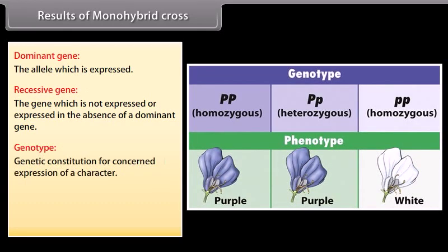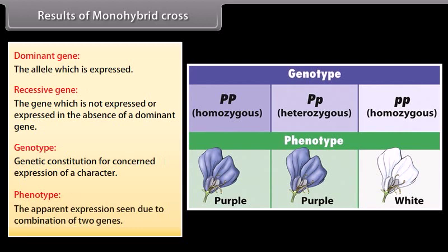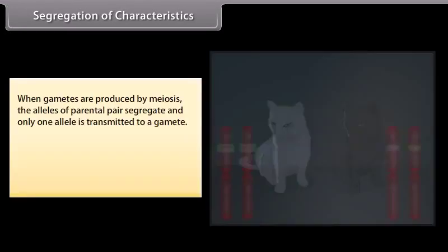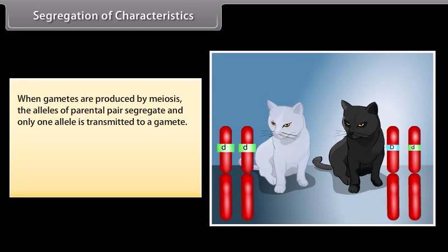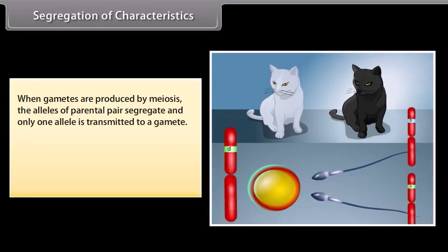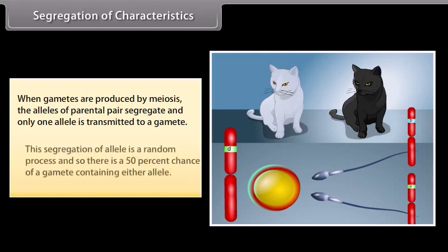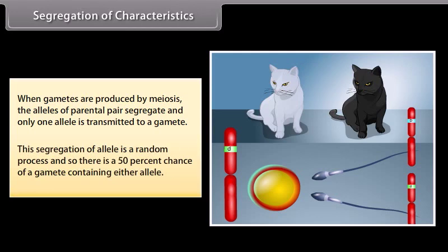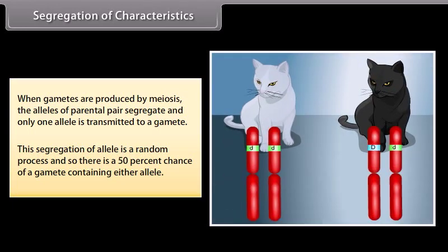Genotype: the genetic constitution for the concerned expression of a character. Phenotype: the apparent expression seen due to the combination of two genes. Segregation of characteristics: when gametes are produced by meiosis, the alleles of a parental pair segregate and only one allele is transmitted to a gamete. This segregation is a random process, so there is a 50% chance of a gamete containing either allele.